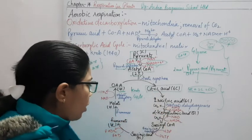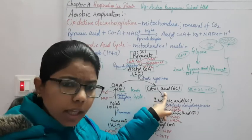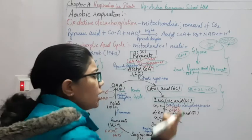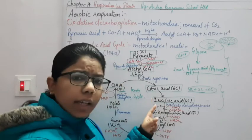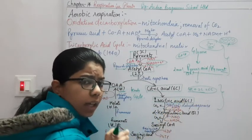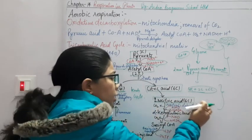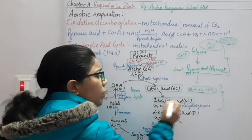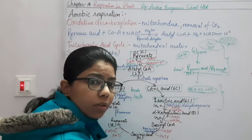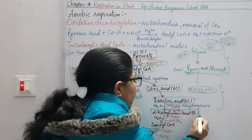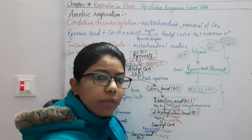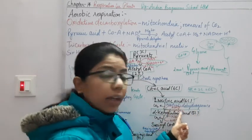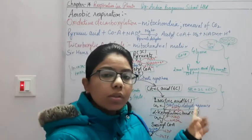This citric acid, a 6-carbon compound, forms another product: isocitric acid, also a 6-carbon compound. In this cycle, the compounds are forming their simpler forms. This isocitric acid undergoes decarboxylation — removal of CO₂ — reducing from 6 carbons to 5 carbons. The enzyme used here is isocitrate dehydrogenase, which transforms NAD into NADH₂. We get alpha-ketoglutaric acid, which is a 5-carbon compound.